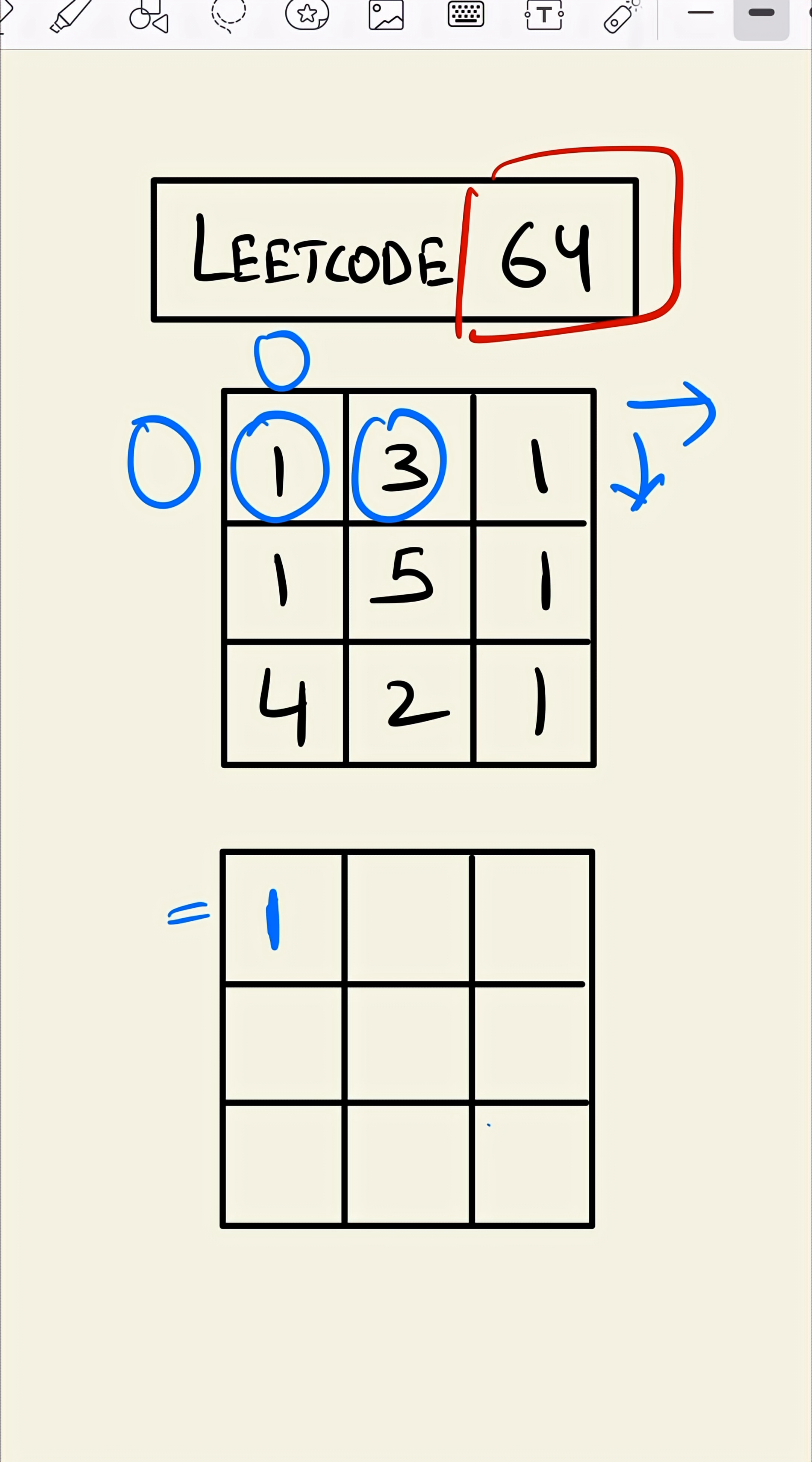For this grid, the minimum of from the left or from the top, since there is no top here, the value would be three plus the value from the left four. Same for this one, the value from the left is four and its value is one, so five here.